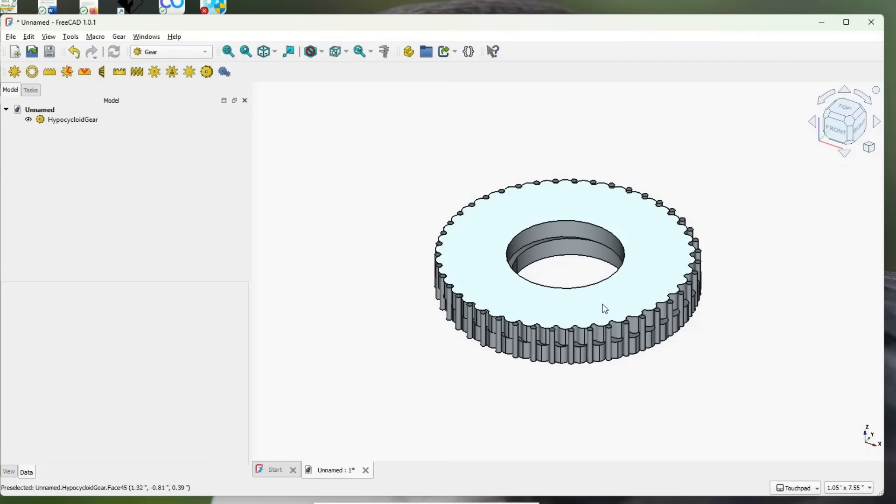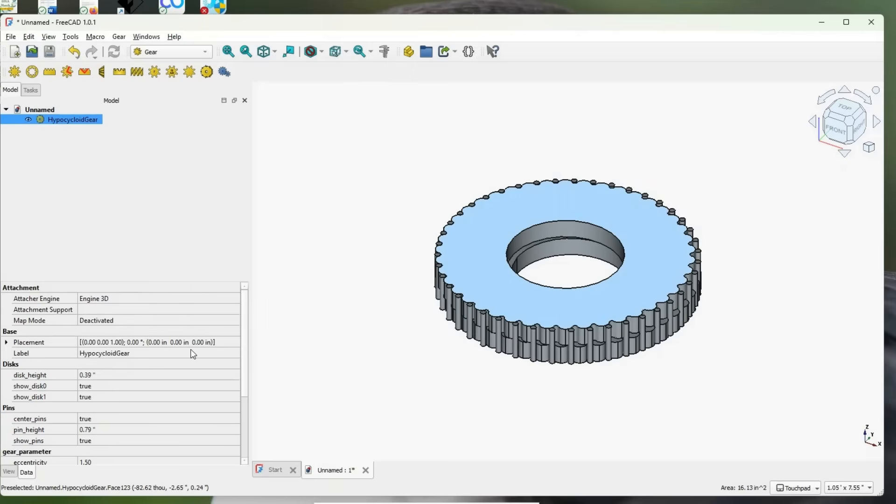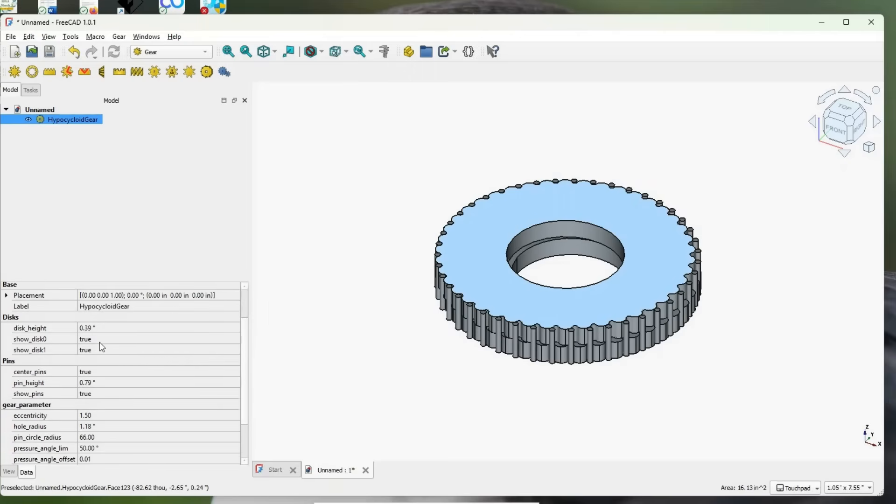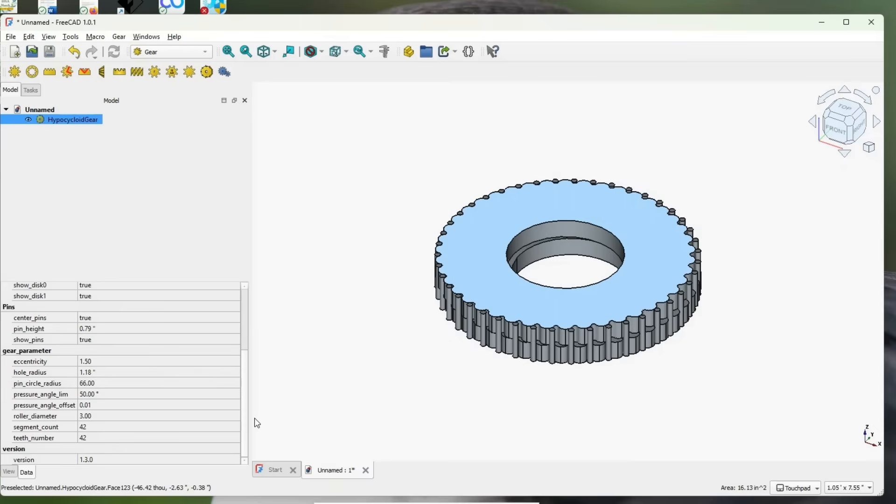There it is right there and if we click on that we get the parameters of the cycloid that we can change. Things like the disk height, whether there are center pins, how big the eccentricity is, how many little loops there are. There's absolutely everything in there to make designing something like a hypercycloid gear, well a piece of cake.